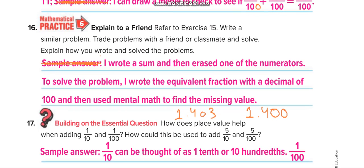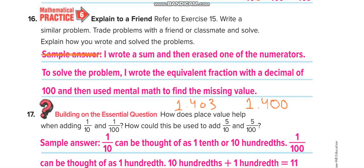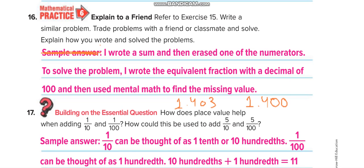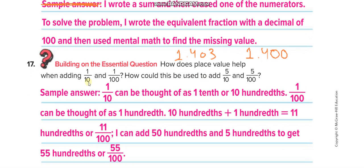And this is for exercise 15, similar problem for exercise 15. And here is how we find 1 over 10 plus 1 over 100. 1 will be 10 over 100, so it will be 11 over 100. And this one: 50 over 100 plus 5 over 100 equals 55 over 100.